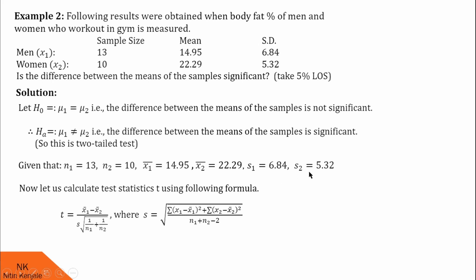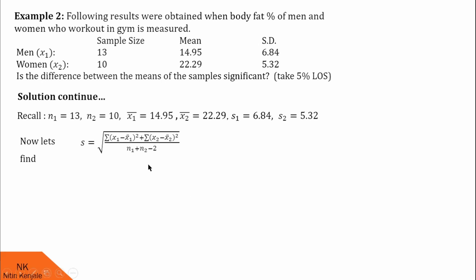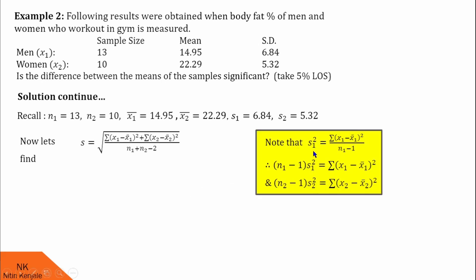For that, we need the values of summation (x1 minus x1 bar) squared and summation (x2 minus x2 bar) squared. Note that s1 squared, the variance formula, is summation (x1 minus x1 bar) squared divided by (n1 minus 1). Taking (n1 minus 1) to the other side, we get: (n1 minus 1) into s1 squared equals summation (x1 minus x1 bar) squared. So this term's value is (n1 minus 1) into s1 squared; s1 is 6.84 and n1 is 13. On similar lines, we calculate summation (x2 minus x2 bar) squared by the formula (n2 minus 1) into s2 squared, since s2 and n2 are both known.